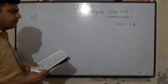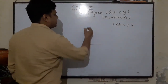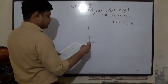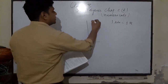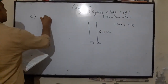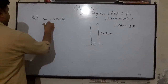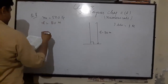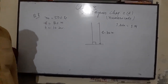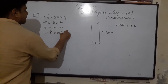Question number 8: A pump is used to lift 500 kg of water from a depth of 80 meters in 10 seconds. Mass = 500 kg, depth h = 80 m, time = 10 s. In part A, calculate the work done by the pump.